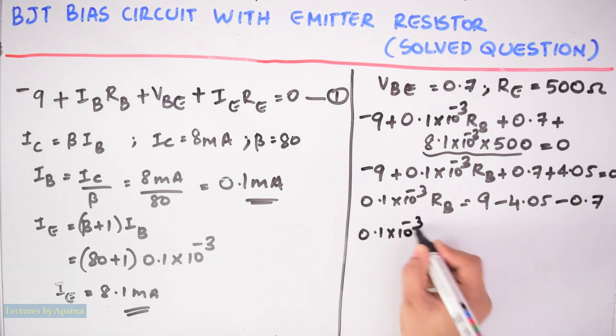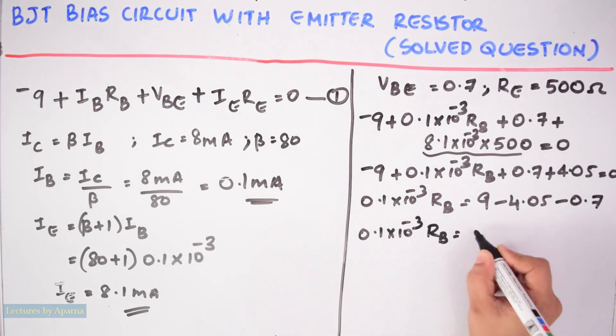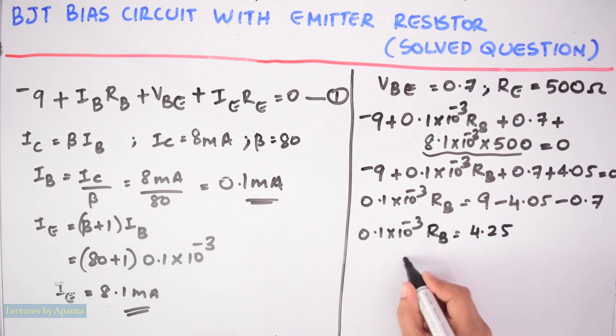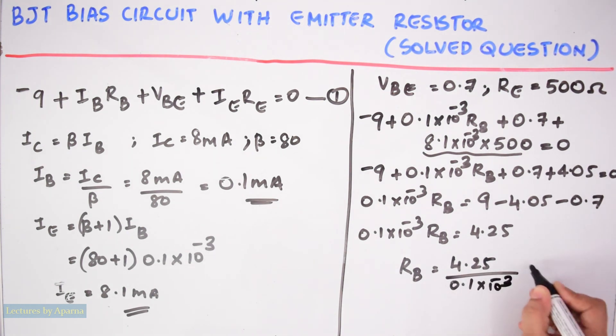Minus 9 plus 0.1 into 10 raise to minus 3 RB plus 0.7 plus this term will become 4.05 equals 0. So minus 9 plus 4.05 plus 0.7, or we can write 0.1 into 10 raise to minus 3 RB is equal to 4.25.